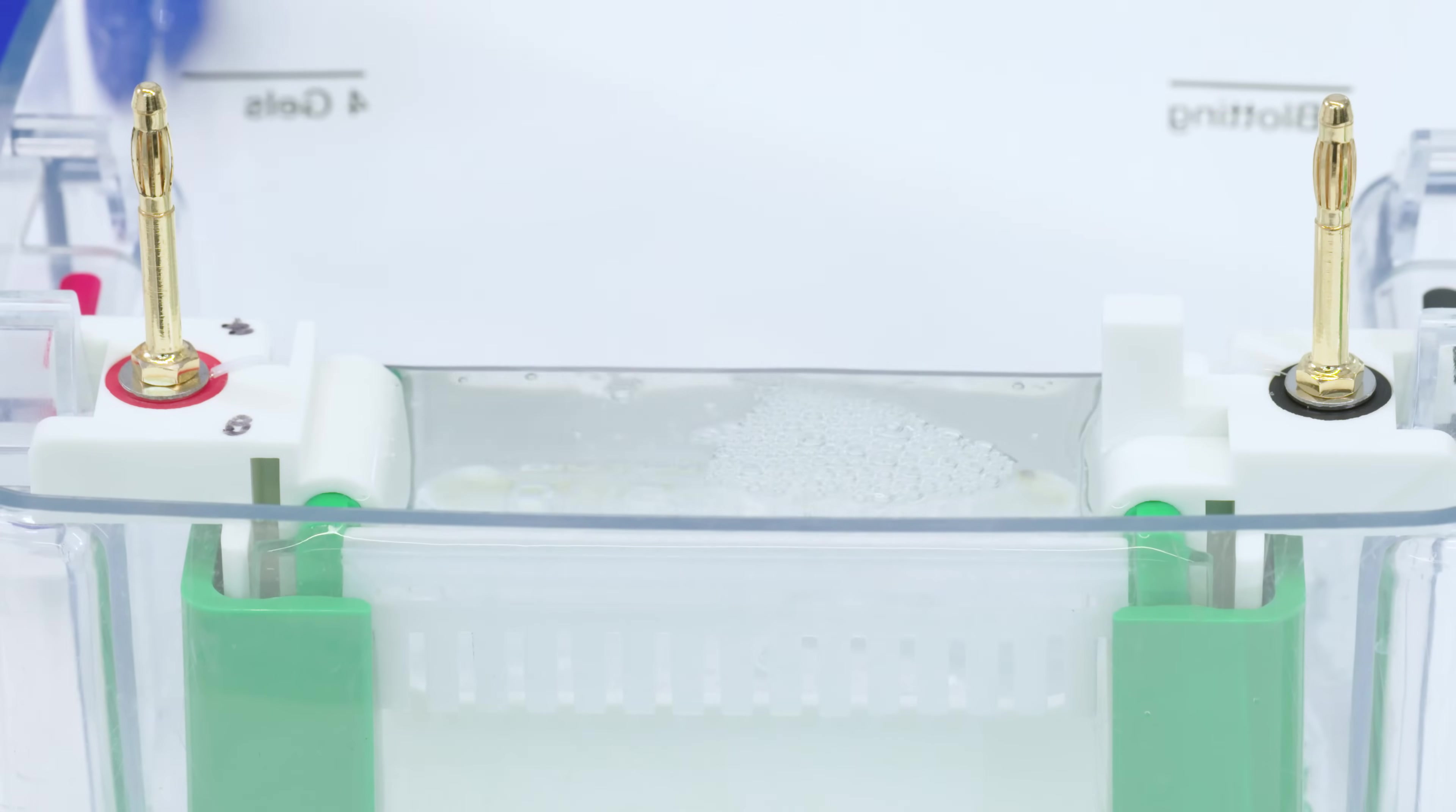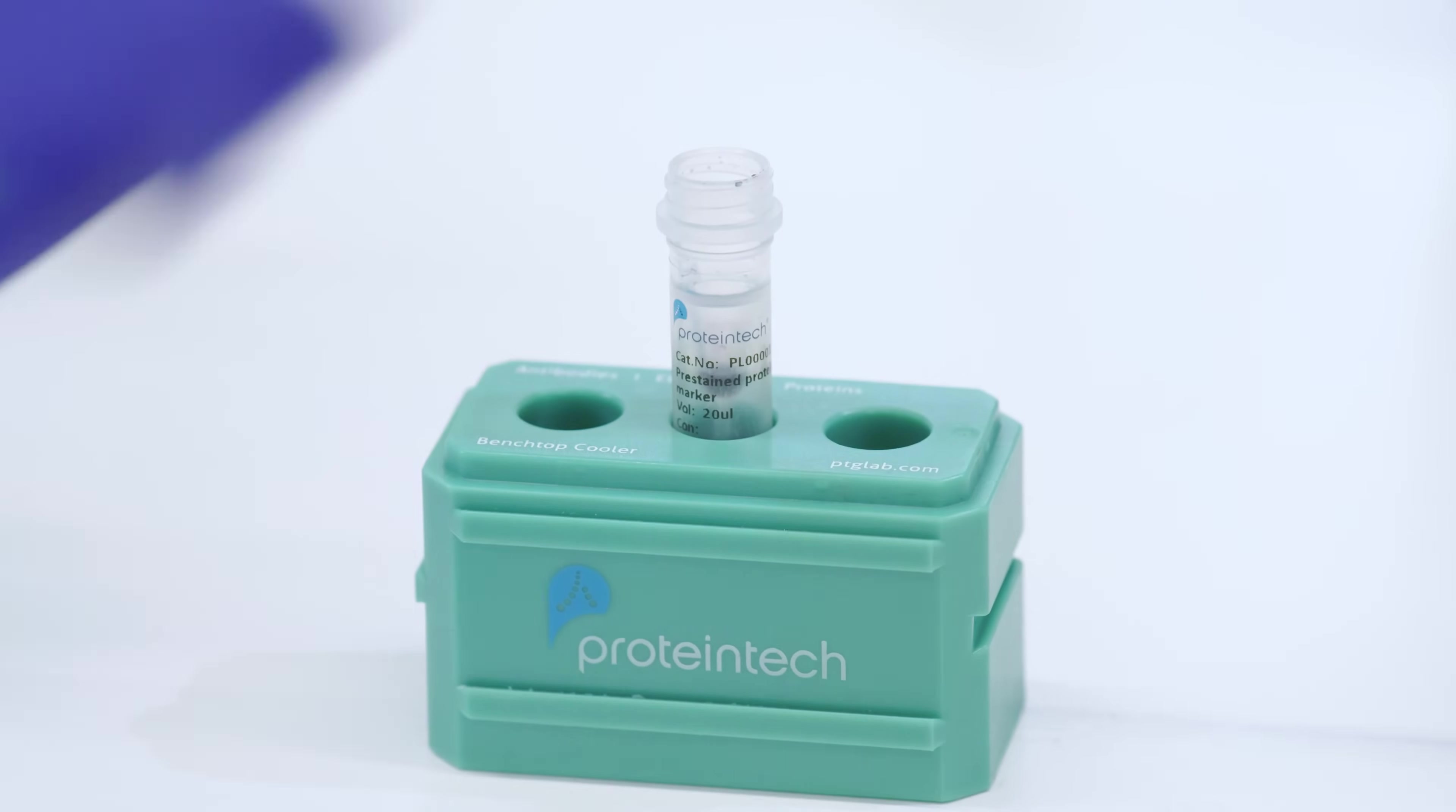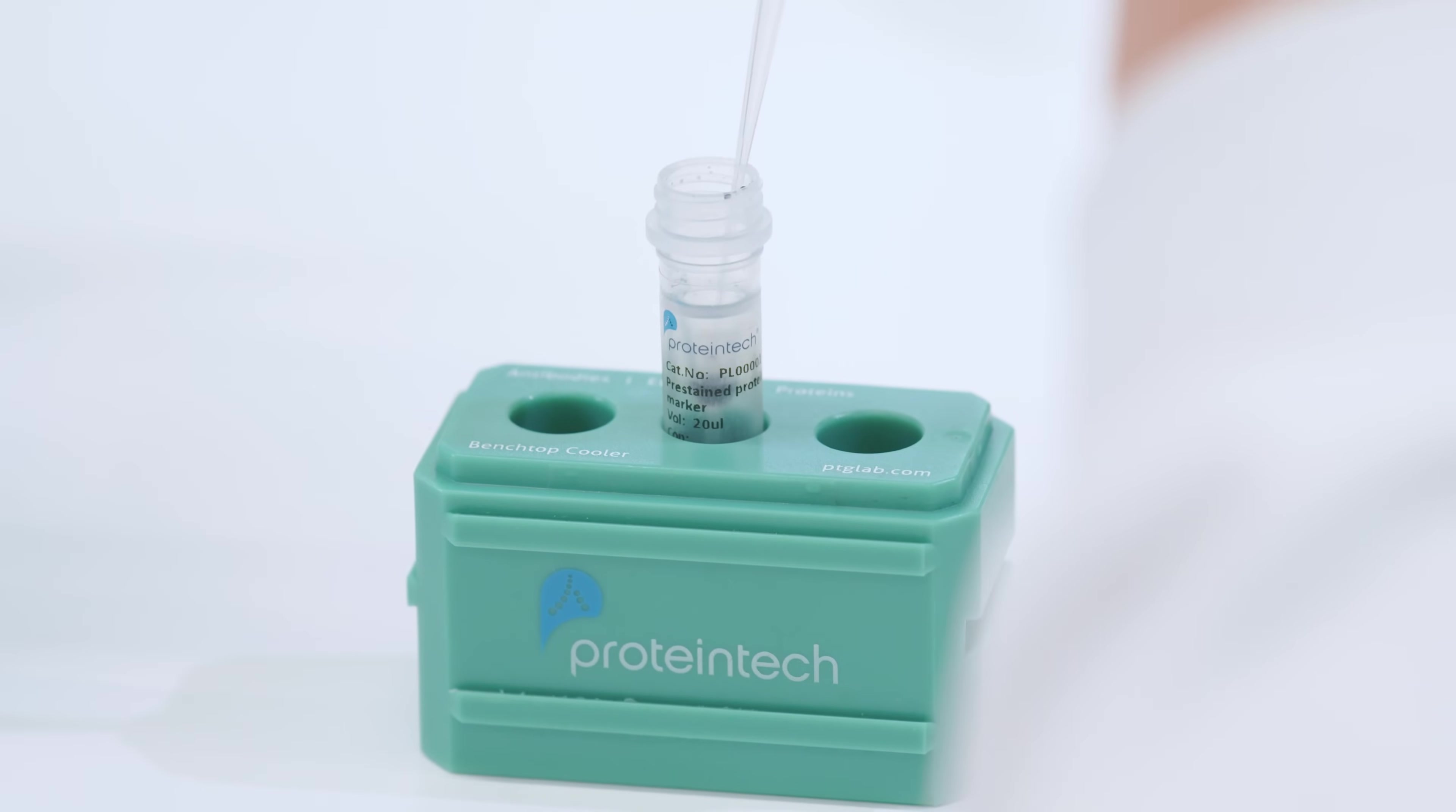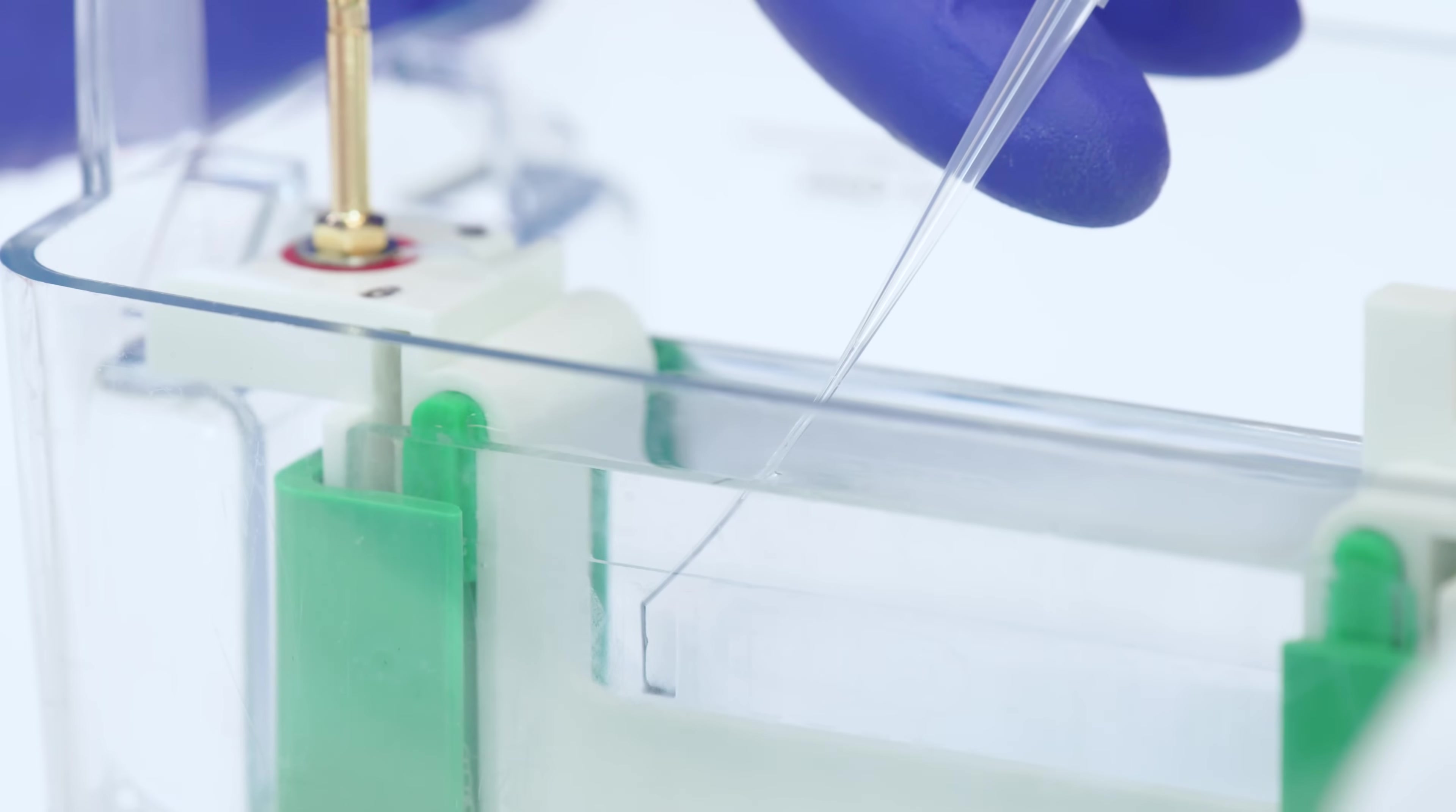Prepare the apparatus by submerging the gel in running buffer. Load a molecular weight marker into the first well to serve as a size reference for your protein of interest. The molecular weight marker also serves as a quality control to assess later transfer efficiency.